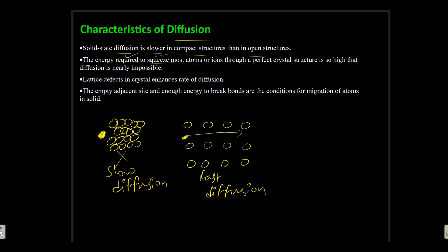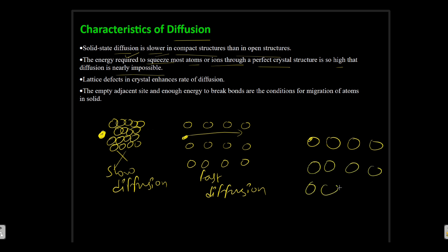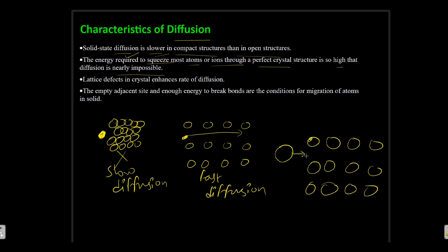The energy required to squeeze most atoms or ions through a perfect crystal structure is so high that diffusion is nearly impossible. In a perfect crystal with no point defects, an atom trying to migrate would face strong repulsion forces and require enormous energy to squeeze through. Lattice defects in a crystal enhance the rate of diffusion. An empty space and enough energy to break bonds are the conditions for migration of atoms in a solid.